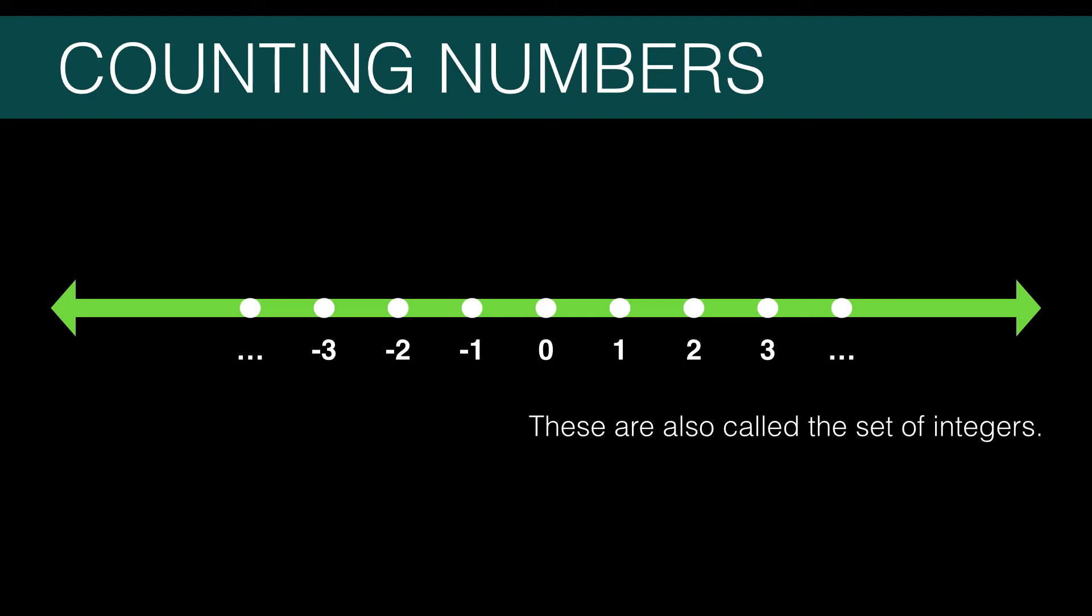Now these numbers go on forever in both the positive and negative direction. On a computer, you can't represent every number. No matter how you construct a number, eventually you're going to run out of space on the computer. The set of valid numbers that you can use is limited in something we call a Java primitive.